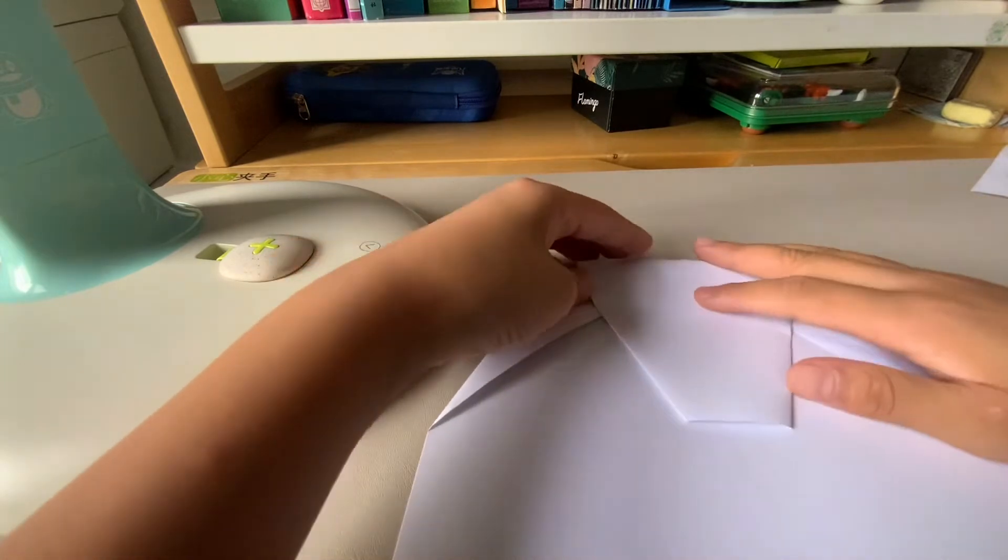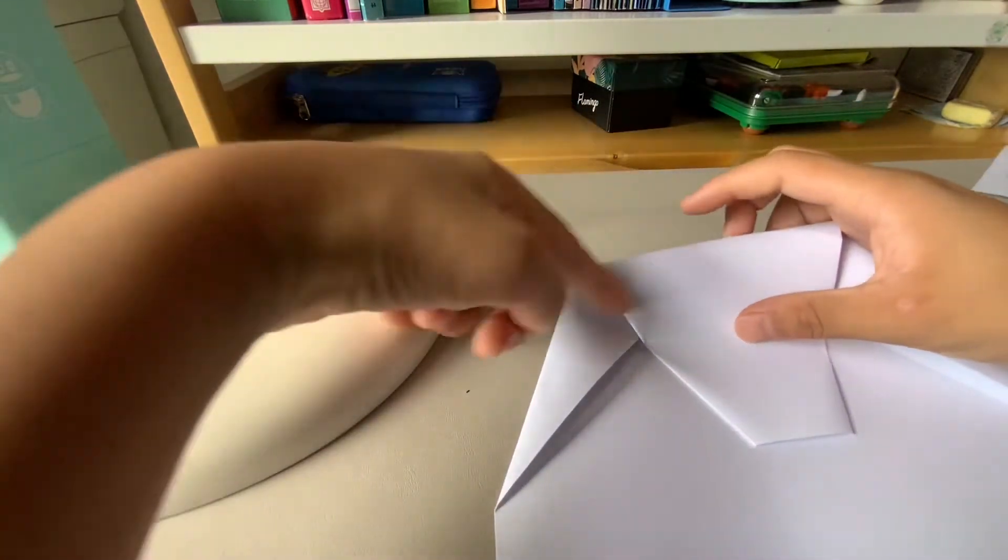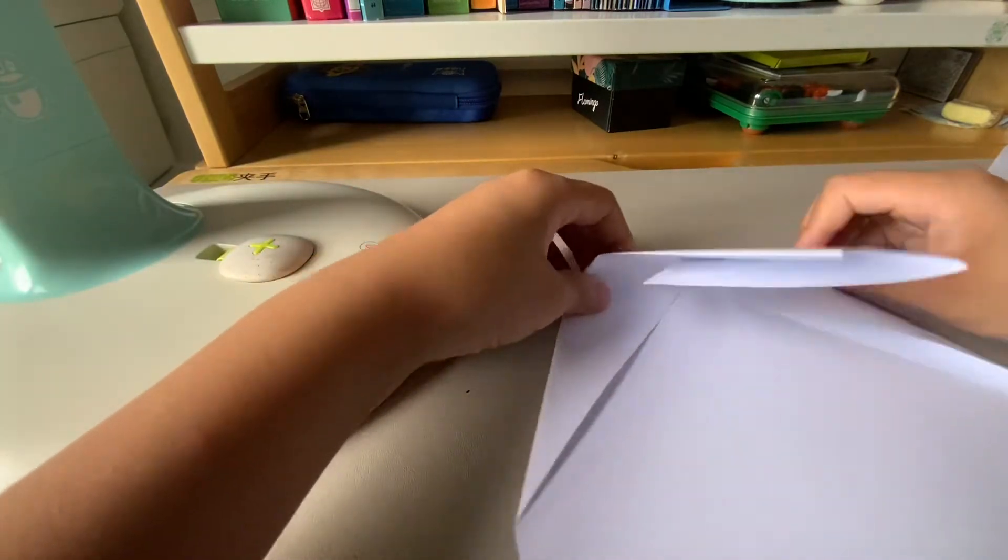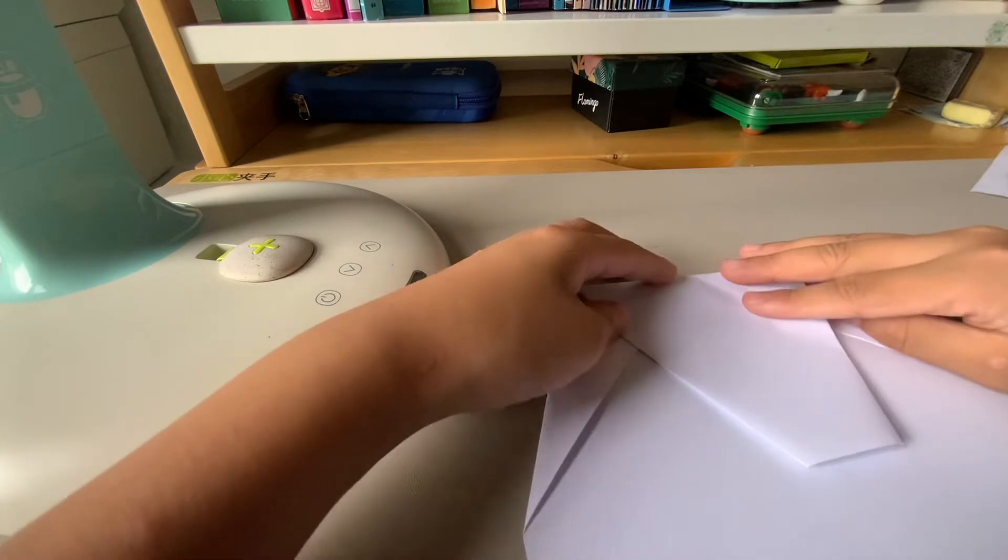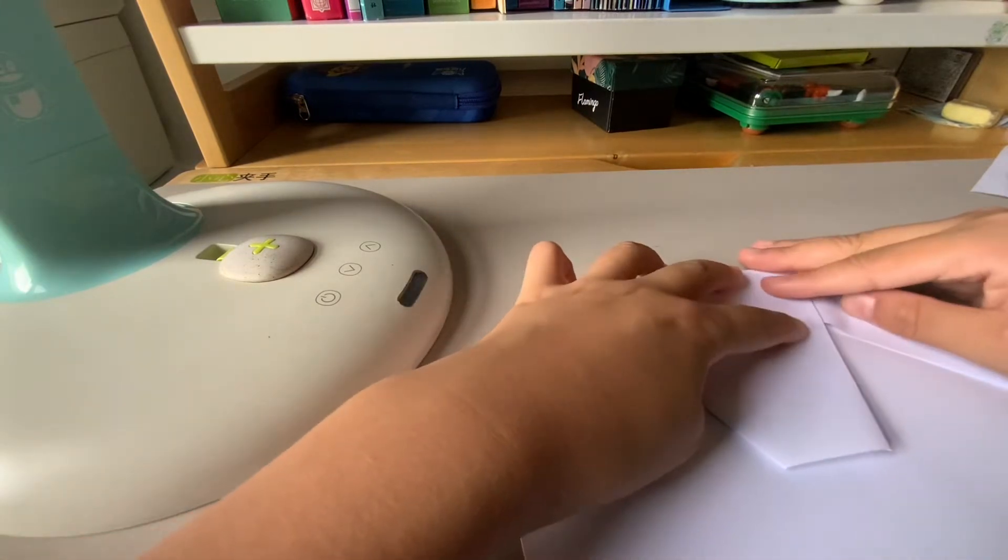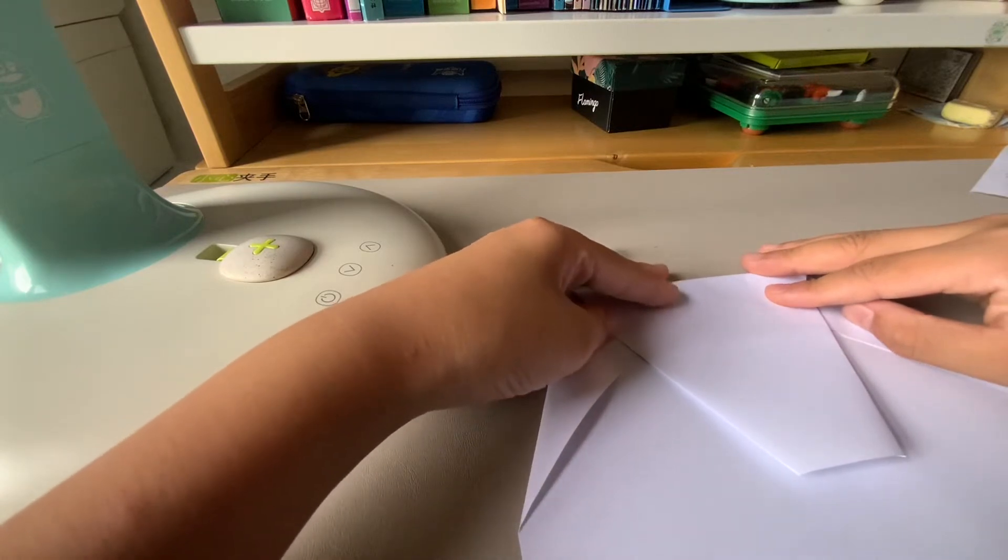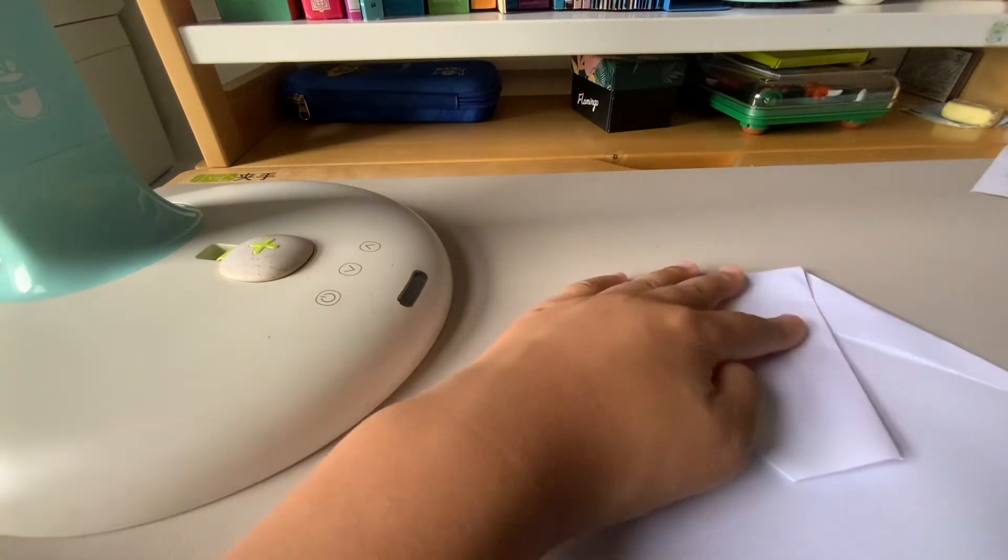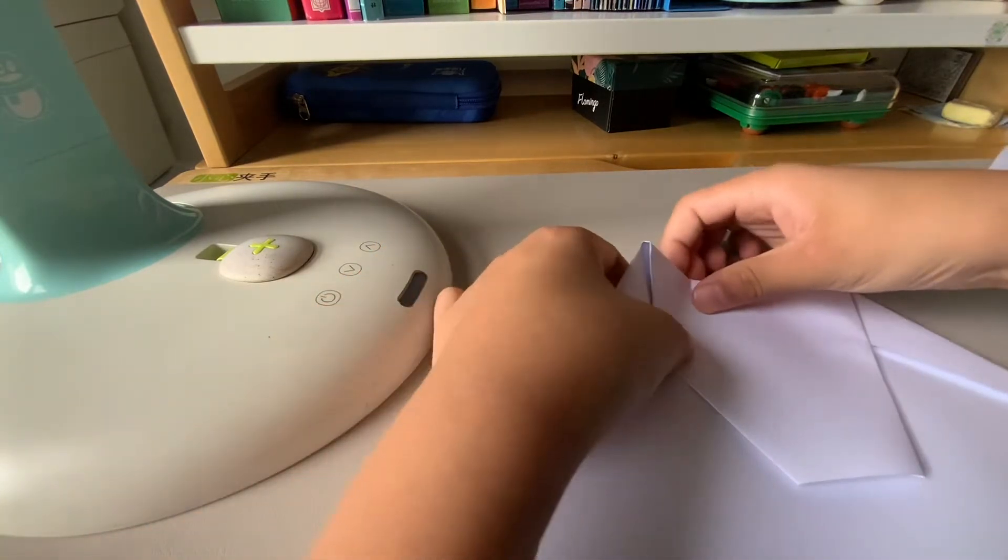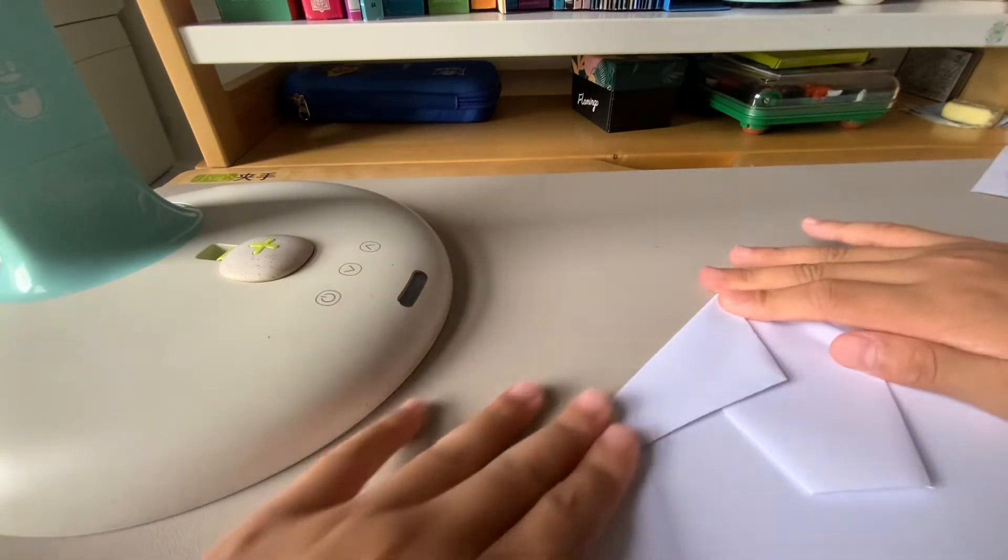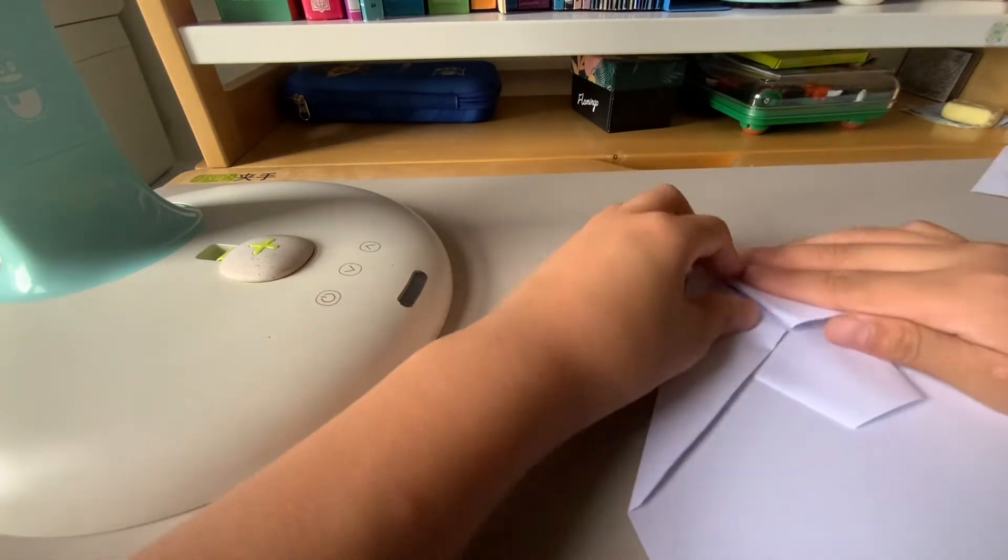Don't worry about the line, just fold it down. You should see two of these. Make sure they cooperate with the lines at the bottom, just like this. Then you want to fold these together steadily.